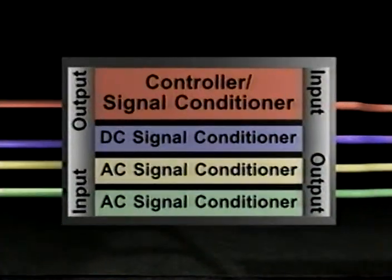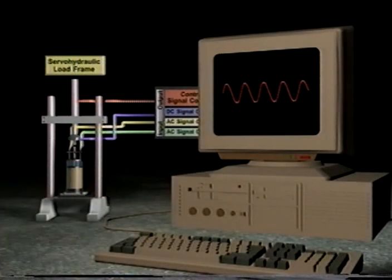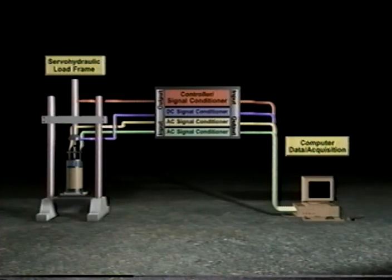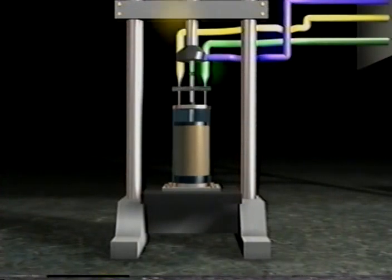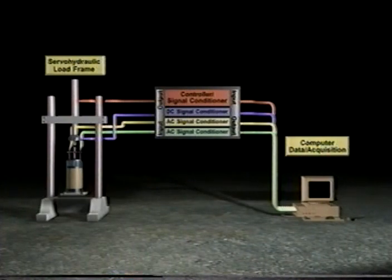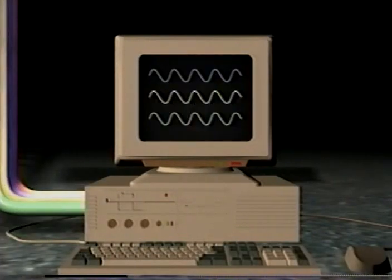First, the electronics. There's an input side and an output side. On the input side, you key in a reference signal — shown here in red — that you want the system to run on a sample, and the controller sends that information to the servo hydraulic system, which creates the load cycles you keyed in. On the output side, you're dealing with signals coming back from your load cell and LVDTs. Each of these transducers sends a signal to a signal conditioner, which converts the signal and sends it to the computer, where the signal is digitized, displayed, printed, and stored.